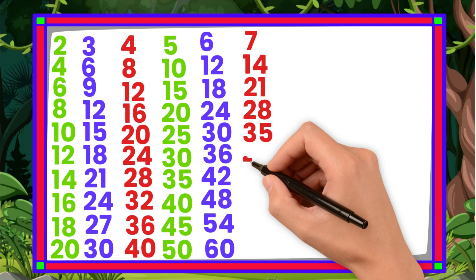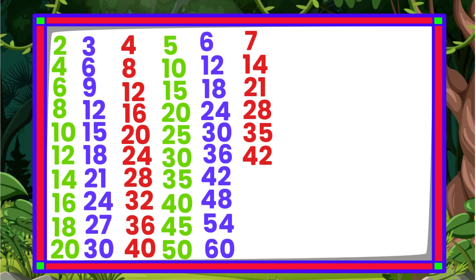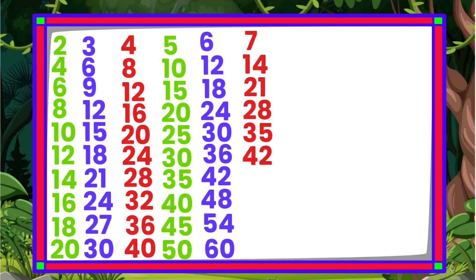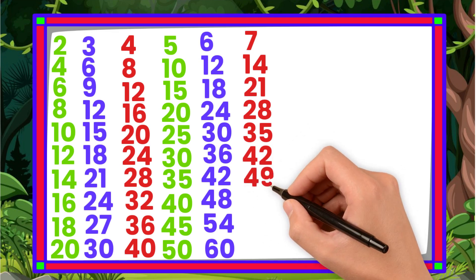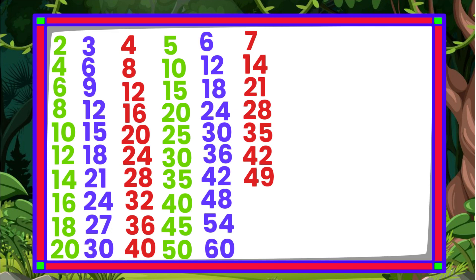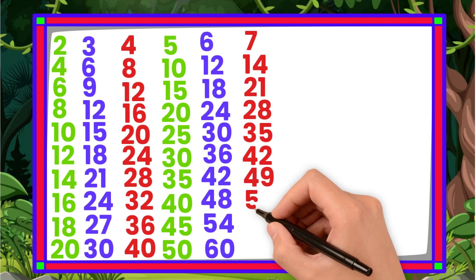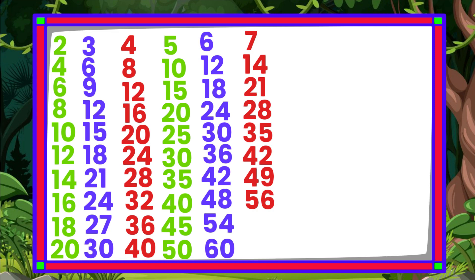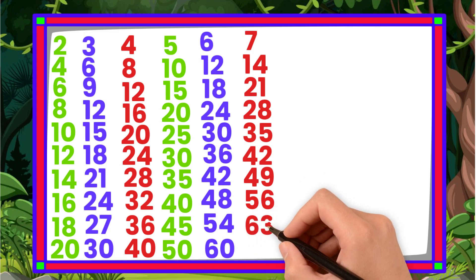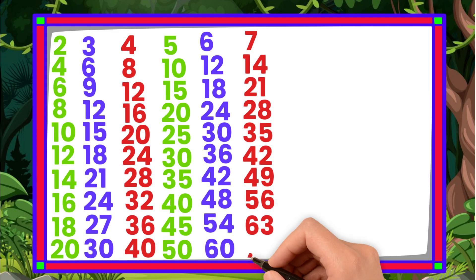7 6s are 42. 7 7s are 49. 7 8s are 56. 7 9s are 63. 7 10s are 70.